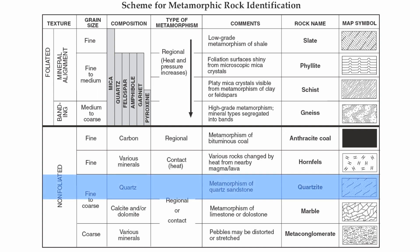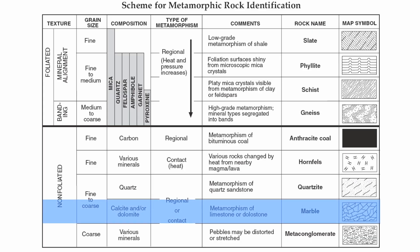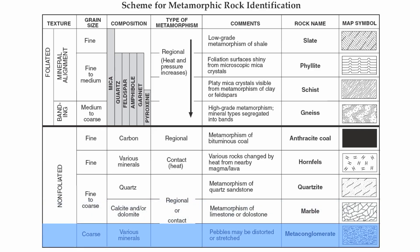Quartzite is going to come from the metamorphism of quartz sandstone. Marble is going to come from the metamorphism of limestone or dolostone. Metaconglomerate is going to come from the metamorphism of conglomerate — in this case, your pebbles within there, instead of being somewhat rounded, are going to be somewhat stretched out. That's it for now for your metamorphic rock chart. Good luck with this, and we'll talk to you soon.